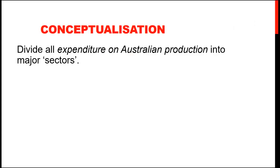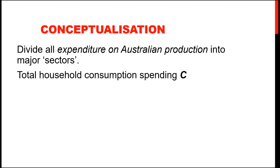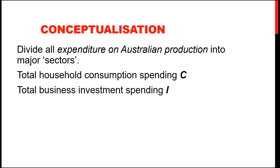So let's do that using a very simple model called the circular flow of income and expenditure. We'll divide all of the expenditure on Australian production of goods and services over some period of time — say, a year — into some major sectors. Let's say we've got total household consumption spending on Australian goods and services.